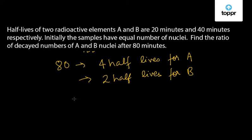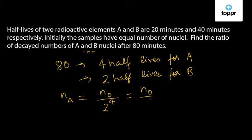We will calculate the remaining number of nuclei of A after 80 minutes. Let the remaining number of nuclei of A be n_A. It will be N0 divided by 2 to the power 4, because 80 minutes is 4 half-lives for A, so it equals N0 by 16. The remaining number of nuclei for element B will be N0 by 2 squared, that is N0 by 4.